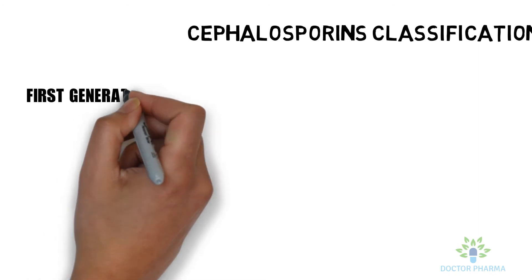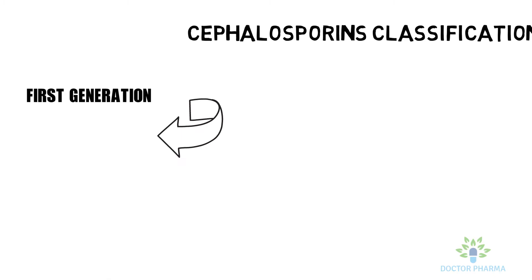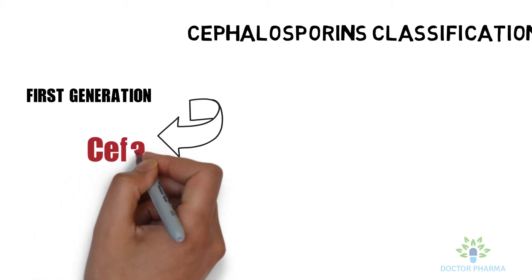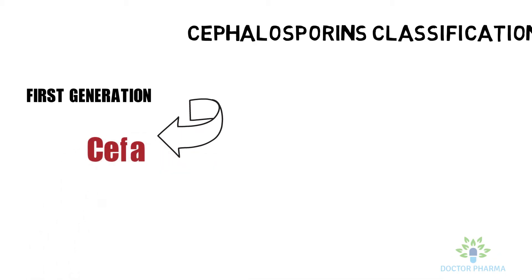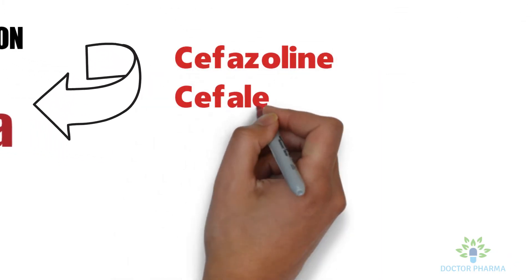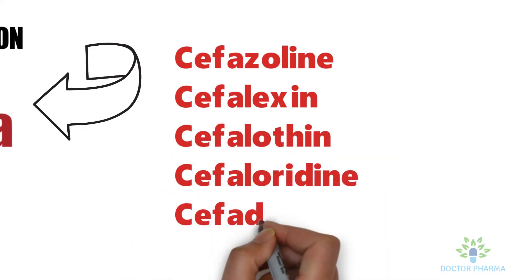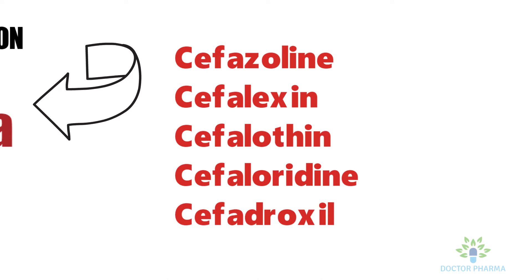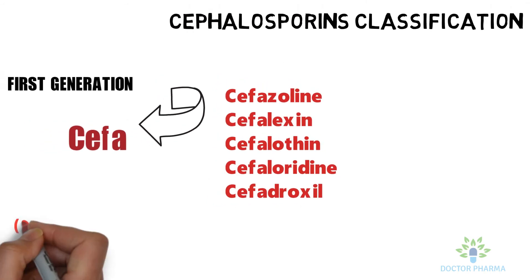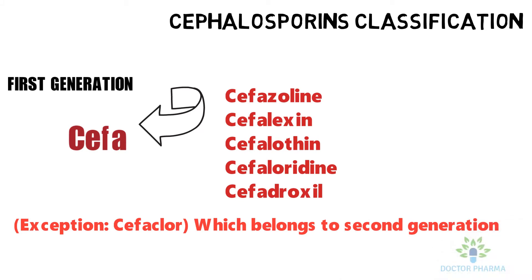Let's begin with the first generation cephalosporins. All first generation drug names start with 'cefa' — for example, cephalexin, cephalothin, cephaloridine, and cefadroxil. There is an exception: cefaclor also starts with 'cefa' but actually belongs to the second generation, not the first.